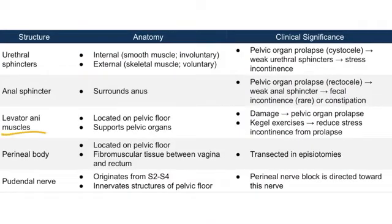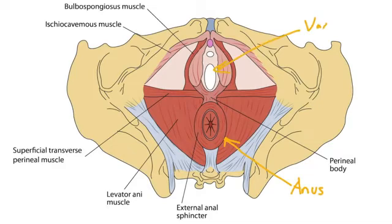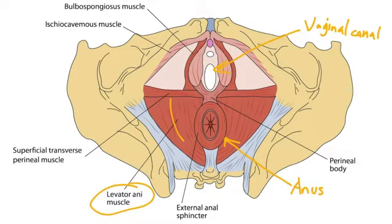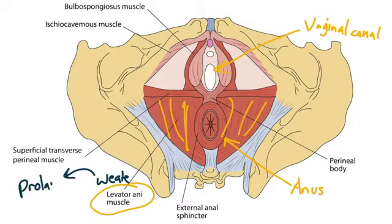Now let's talk about the levator ani muscles. These are located on the pelvic floor and they support the pelvic organs. Damage or weakness can lead to pelvic organ prolapse. We can see the anus and vaginal canal, with levator ani muscle fibers running anterior and posterior. From this perspective, it's much easier to see how important these muscles are for support of the pelvic floor.